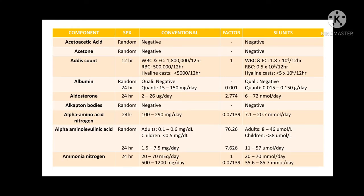Let's start with acetoacetic acid. The type of urine sample needed is any type or a random urine. The expected normal result is negative.